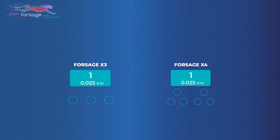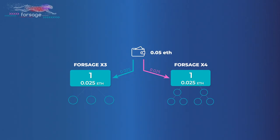Registration. The first slot of each program costs 0.025 Ethereum. But you cannot buy them separately. They are bought together at registration. Accordingly, to register in Forsage, you need 0.05 Ethereum.